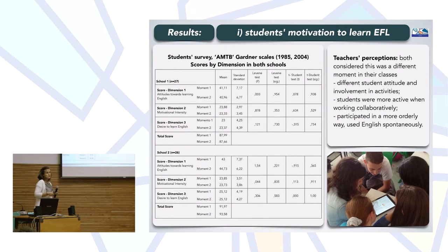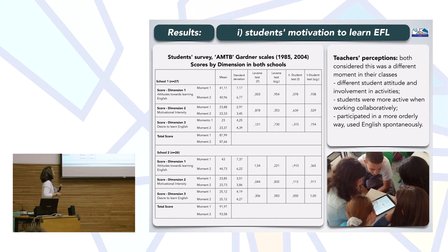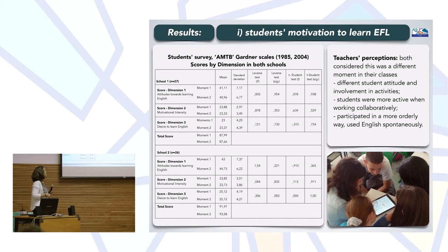As for the results regarding the first research question — student motivation — we used the attitude motivation test battery of Gardner. There wasn't a big difference in terms of students' motivation scores, but the teachers' perceptions during the interview indicated they considered there was in fact a difference in terms of the involvement of the students and how they worked together. The teachers also noted that students worked in a more active way when working collaboratively, and that they participated in class using the English language in a more spontaneous way.